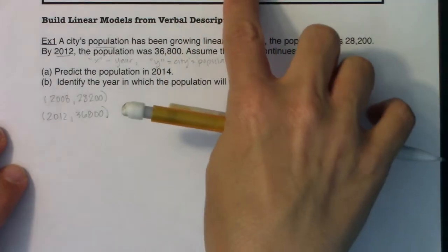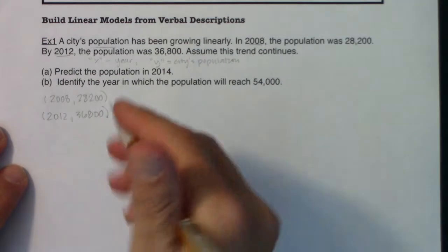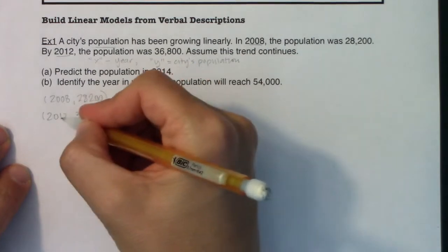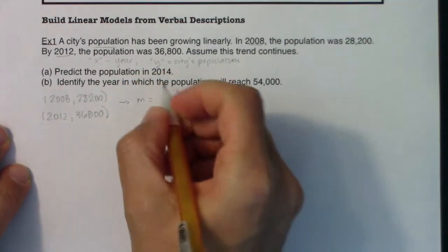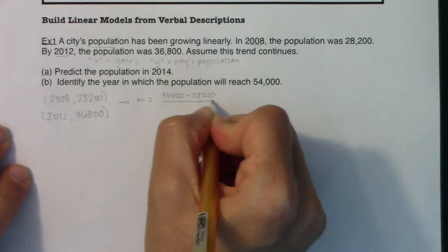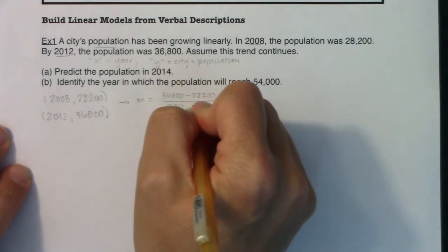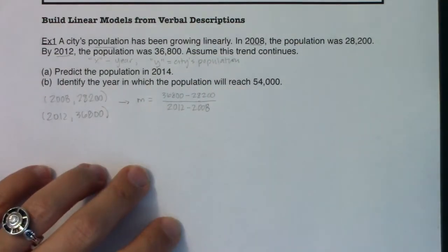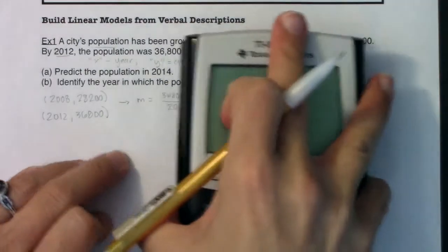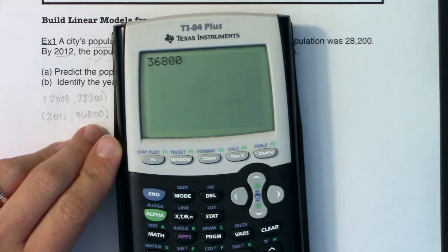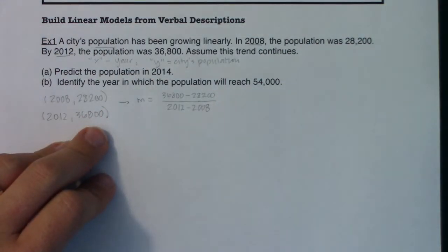The next thing I want to do, if we go back up here and look at the how-to, the next thing it says is to find the slope. So let's find the slope between these two points. We always have y2 minus y1 in ratio to x2 minus x1. So y2 would be 36,800 minus 28,200. And then I would have on the denominator, 2012 minus 2008. So if I run through this, it looks like we're dealing with... I'm going to do 36,800 minus 28,200. Looks like 8,600. And in that denominator, I have 4.